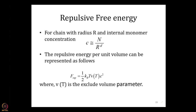The internal concentration is N divided by R to the D, as we discussed. Then I can consider the repulsion energy, which is half k_B T times V times c squared. The parameter V_t is the effective excluded volume parameter — essentially the same as Van der Waals theory. V_t is a temperature-dependent excluded volume parameter, very much like the 'a' parameter in Van der Waals theory.